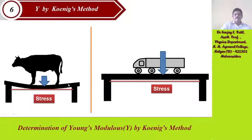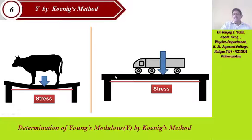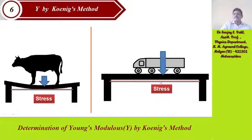Consider a bridge on which a cow is walking — due to the stress, bending action takes place in the bridge. Similarly, a heavy vehicle travelling on a bridge also causes stress. There is stress by the cow and stress by the heavy vehicle.